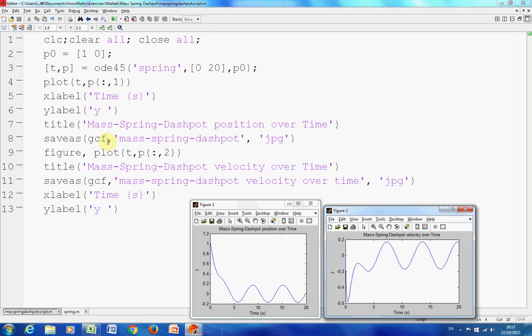We put in a title, do a save as, save the figure. On line nine, we're plotting T and the X, P, all the rows, column two. All the rows, column two, is the solution to the acceleration. The solution to the acceleration is the velocity.